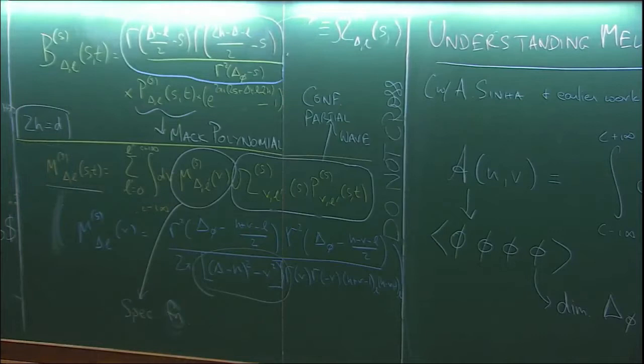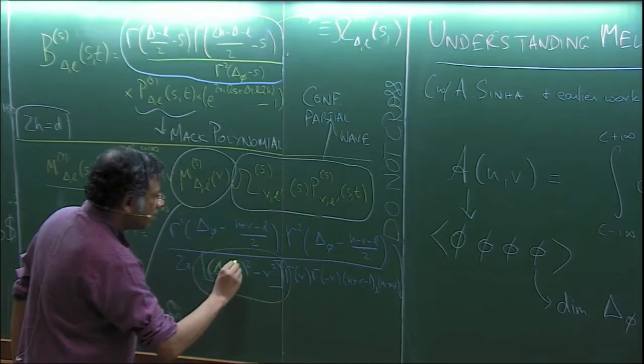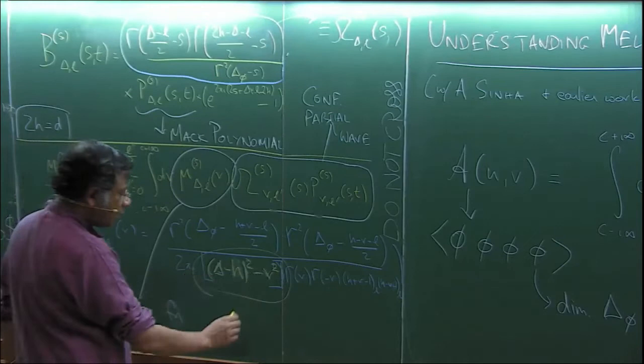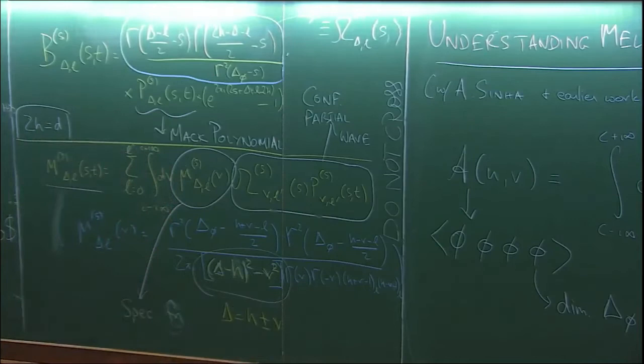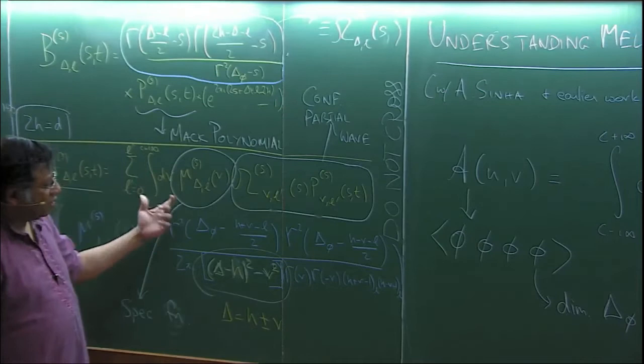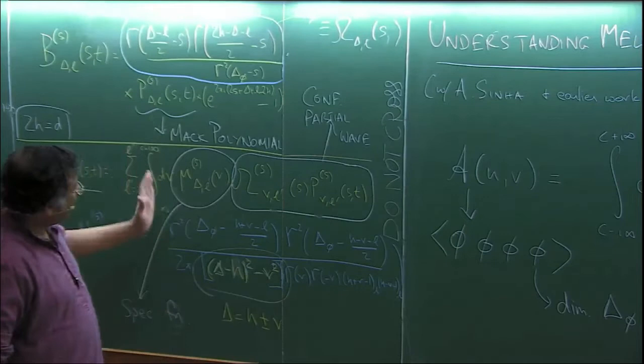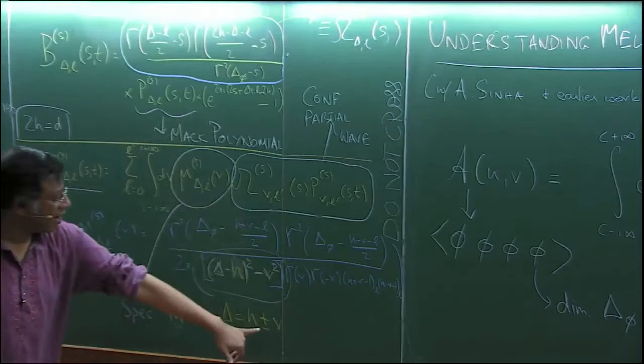Let me highlight the poles: (delta minus h) squared minus nu squared. This has poles at delta equal to h plus or minus nu. These are on the real axis, so when you do the contour you pick up either the pole corresponding to h plus nu, and not the shadow pole which will be on the other side typically.